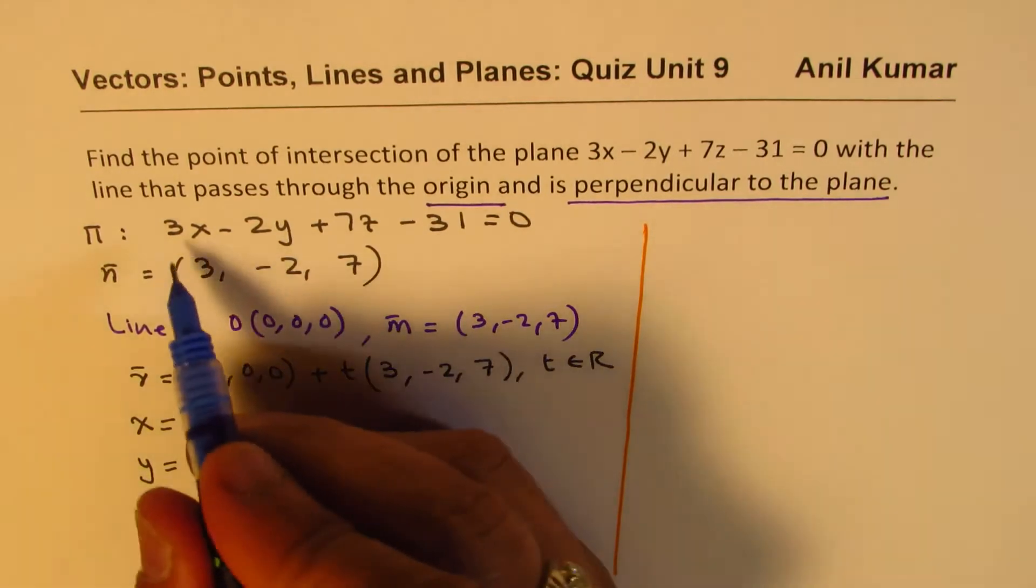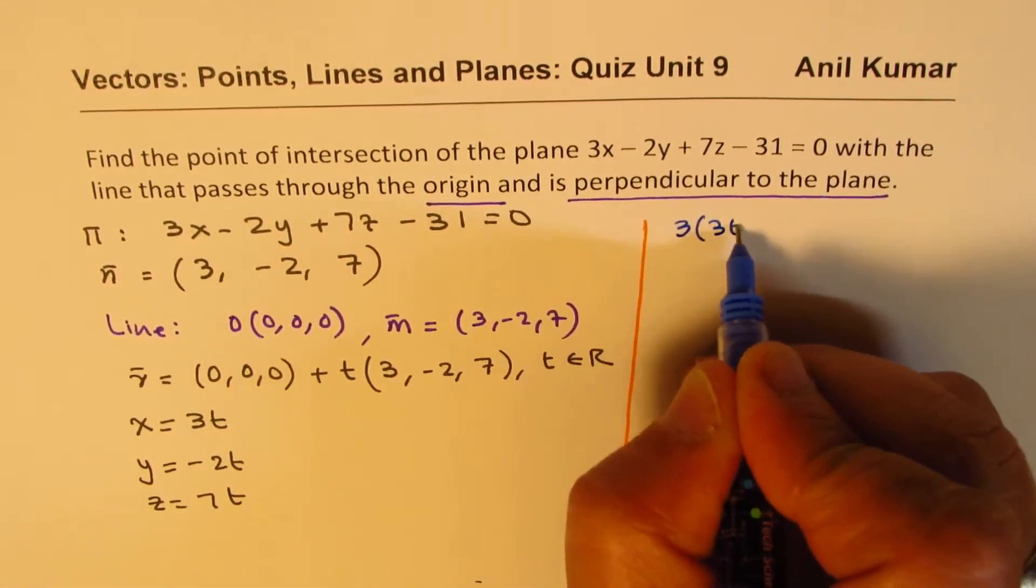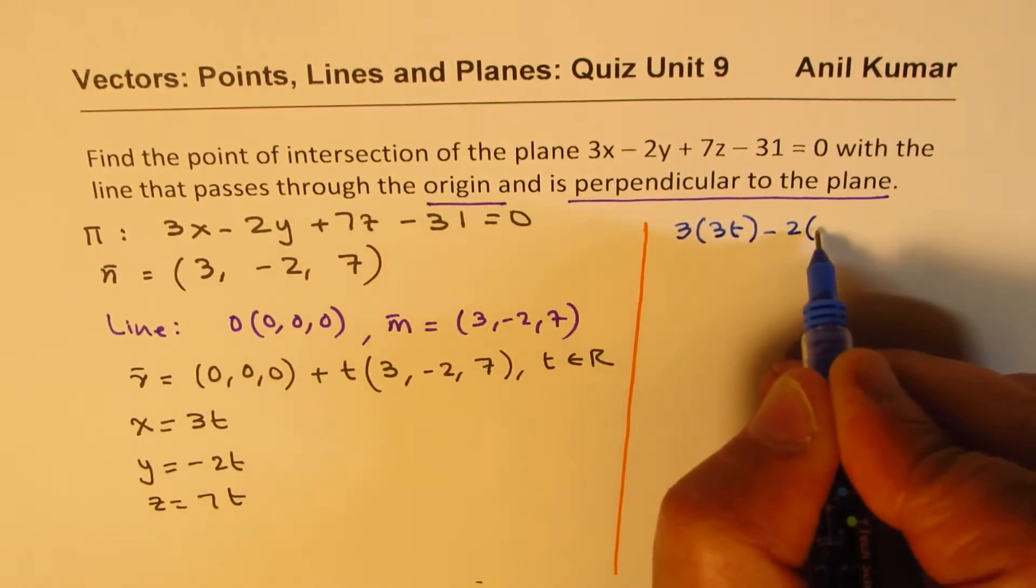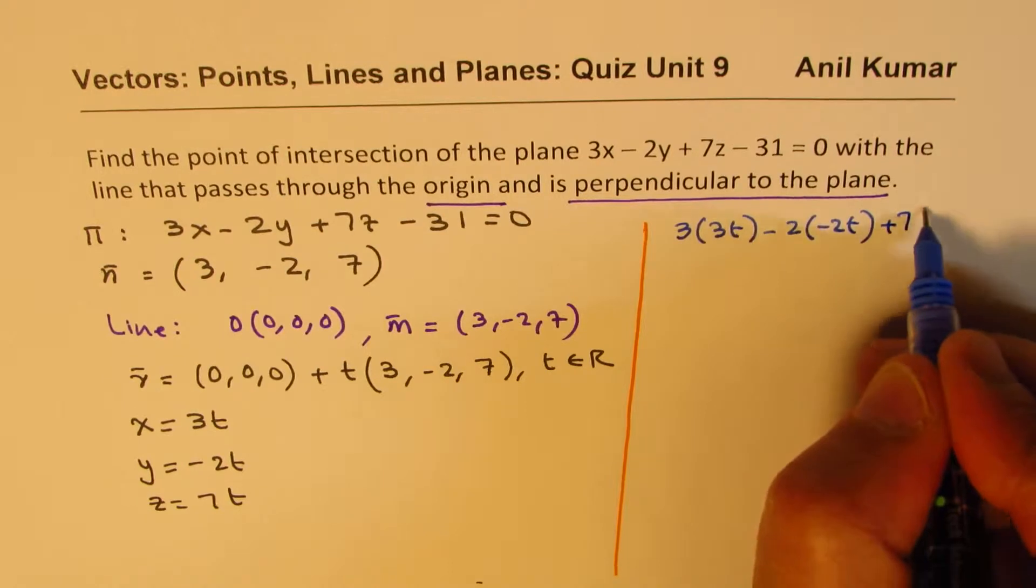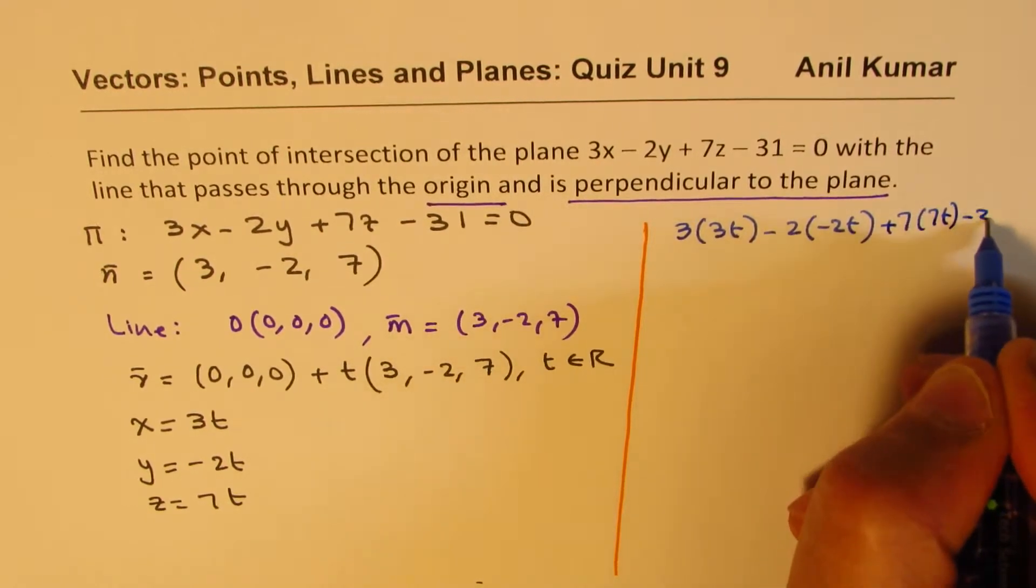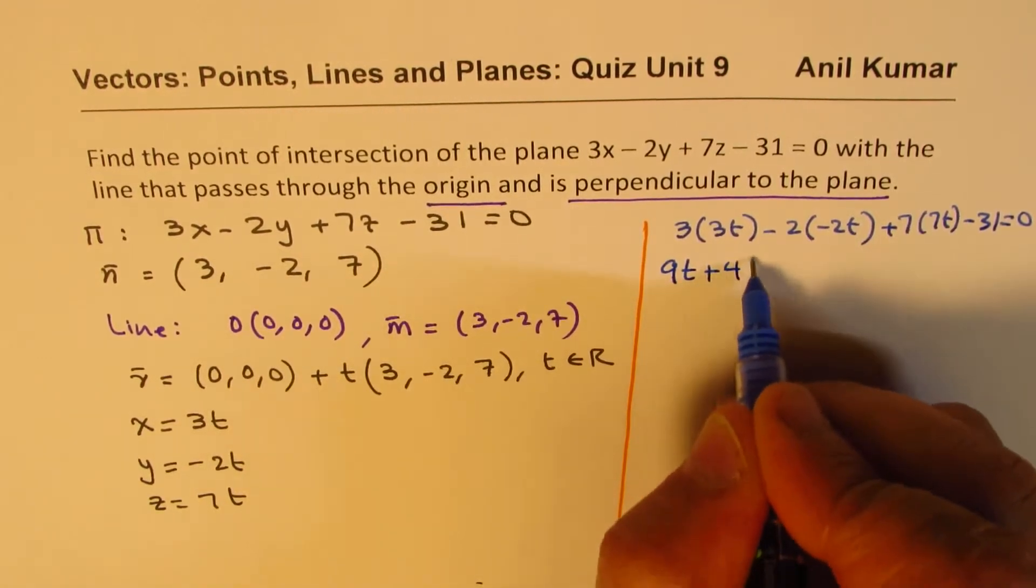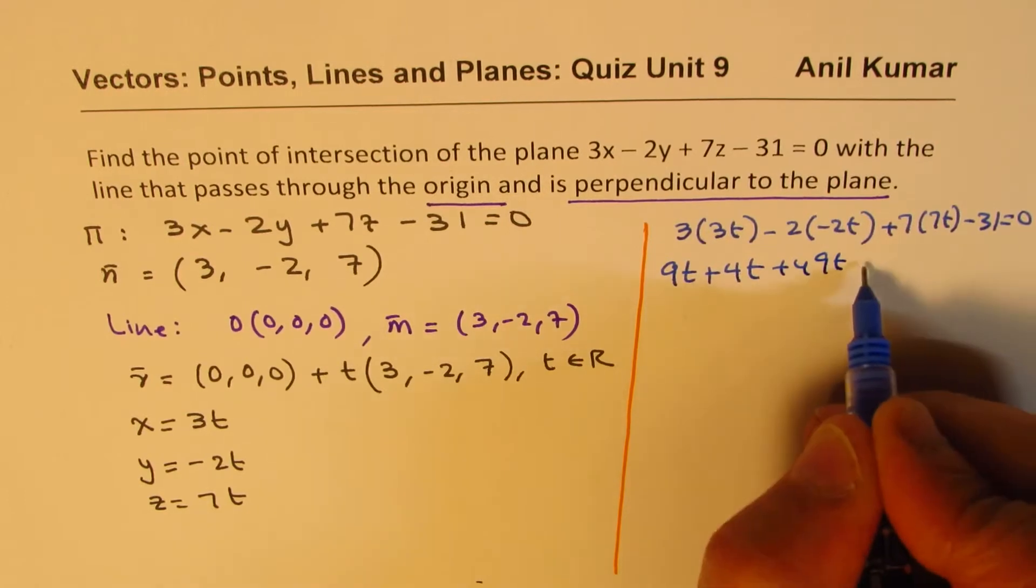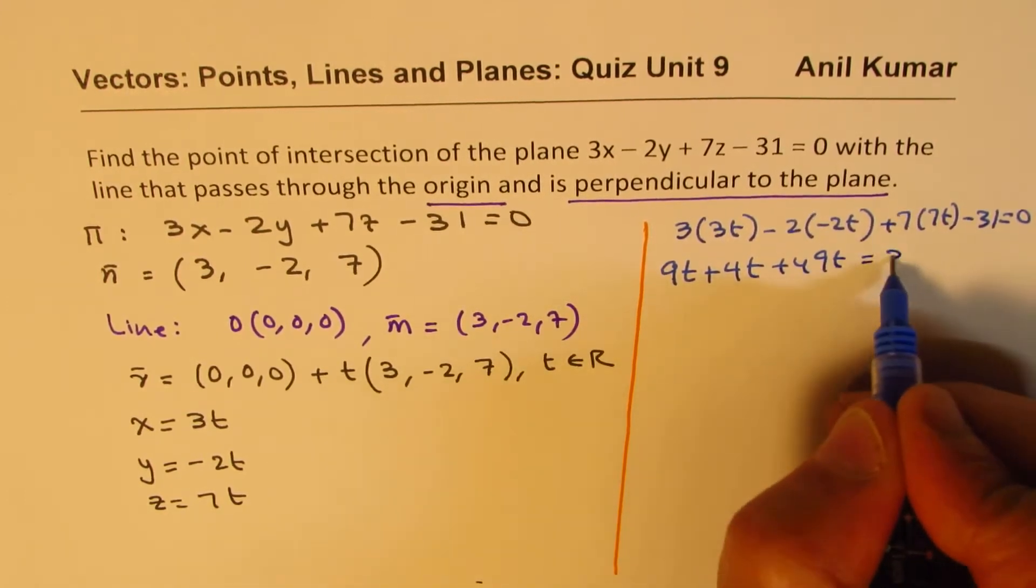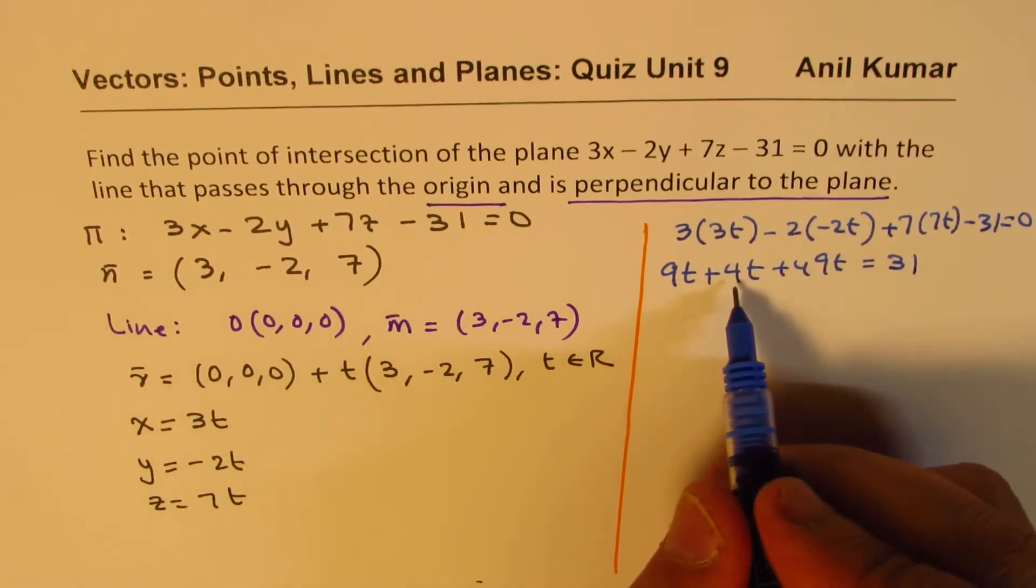So let's do that. So I substitute these points here in the plane. So I get 3 times 3t minus 2 times minus 2t plus 7 times 7t minus 31 equals to 0. So that is 9t plus 4t plus 49t, and that is, I'll take this on the right side, 31.